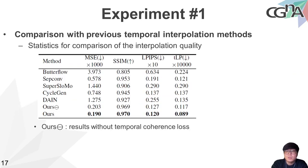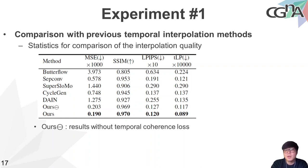This table shows the average MSE, SSIM, LPIPS, and temporal LPIPS values of smoke frames generated by the proposed method and previous temporal interpolation methods. The SSIM value of the proposed method was found to be the highest, while the values of MSE, LPIPS, and temporal LPIPS were the lowest. We also measured the proposed method without the temporal coherence loss. Without it, MSE, SSIM, and LPIPS values were not significantly different, but the temporal LPIPS value — which measures perceptual changes of consecutive frames — improved substantially when the temporal coherence loss was used.